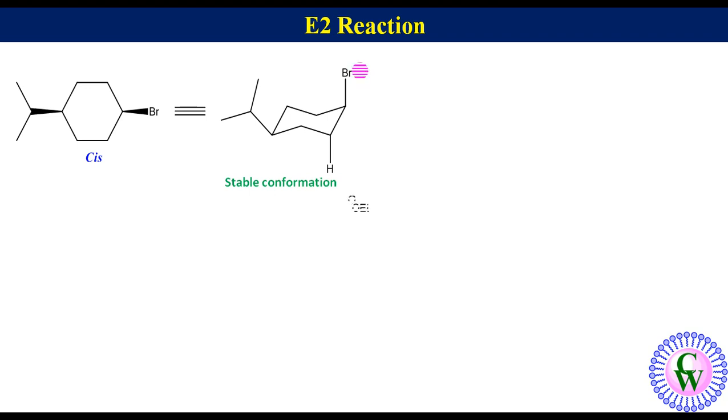So the ethoxide ion abstracts the beta proton and at the same time elimination of the bromo group gives the alkene product.